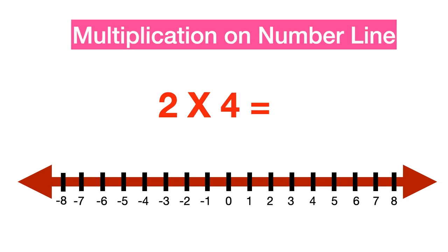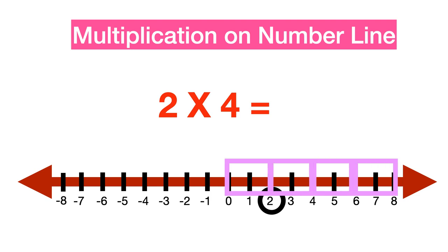Multiplication can also be done using a number line. In this case, you may need to draw a longer number line to accommodate the values, choosing a suitable scale depending on the numbers being multiplied. To multiply 2 by 4, start counting from the origin, moving 2 steps 4 times. 8 is the correct answer.